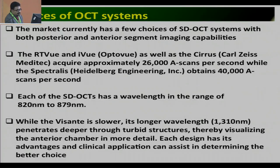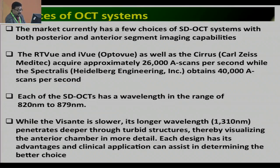Each of the spectral domain OCTs has a wavelength of 820 to 879 nanometers. While the time domain OCT is slower, its longer wavelength of 1310 nanometers penetrates deep through turbid structures, thereby visualizing the anterior chamber in more detail. Each design has its own advantages, and clinical applications can assist in determining the better choice.